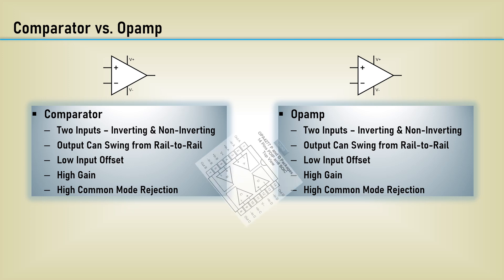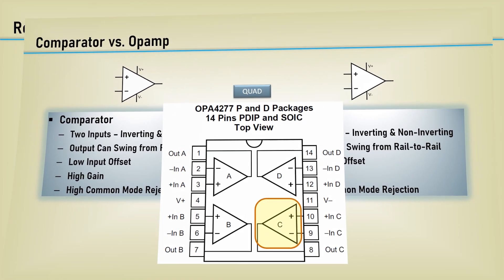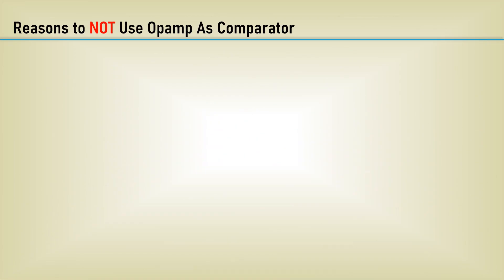Let's say you are using two or three op amps in a quad package, and you need a comparator. It sure would be practical to use that unused op amp as a comparator. However, there are several reasons to not use an op amp as a comparator.